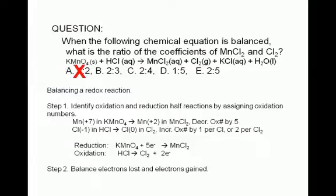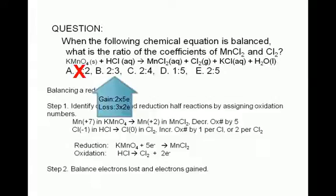How about choice B, which says that the product ratio is 2 to 3? Formation of 2 manganese 2 chlorides means 10 electrons gained — 2 times 5 equals 10. 3 Cl2 molecules formed means 6 electrons lost — 3 times 2 equals 6. Again, we have electrons lost not equal to electrons gained. So choice B is wrong.